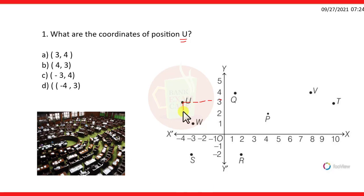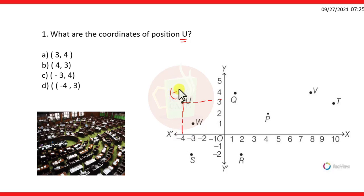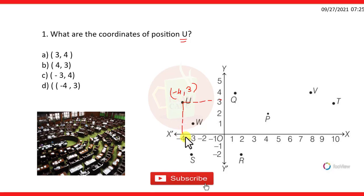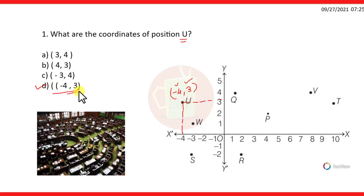The coordinates of position U can be found easily — that is the X and Y coordinates. The X coordinate is the distance from the Y axis, which is minus 4. The distance is 4 units but we take the coordinate as minus 4. The Y coordinate is the distance from the X axis, which is 3 units. So X coordinate is minus 4 and Y coordinate is 3. Therefore option D is the correct option: (-4, 3).